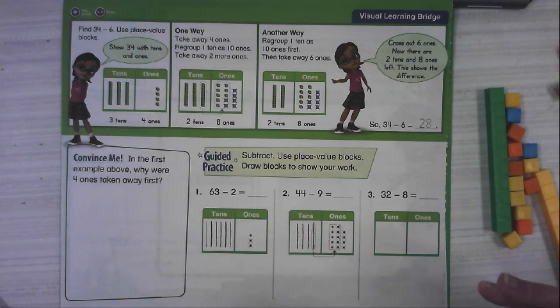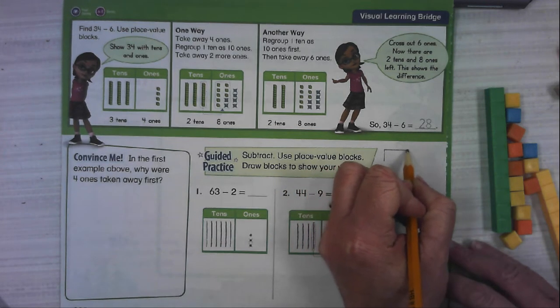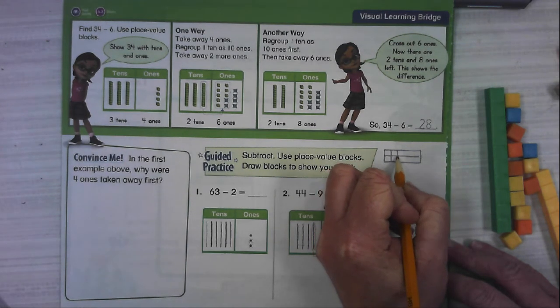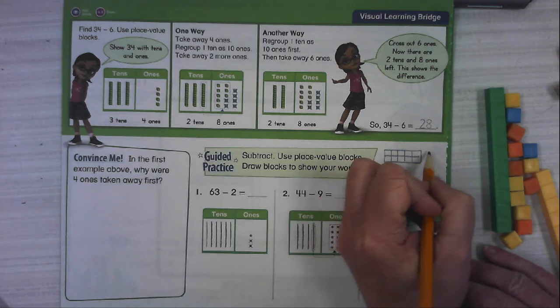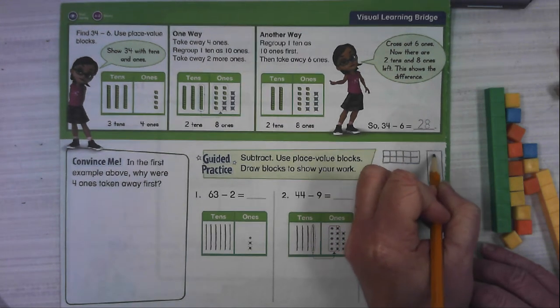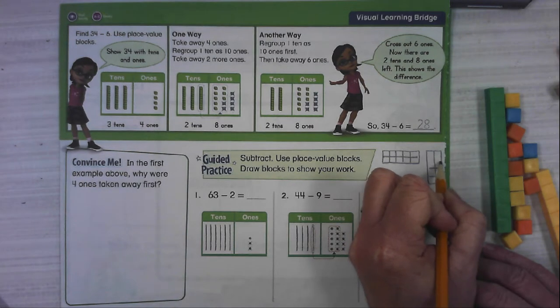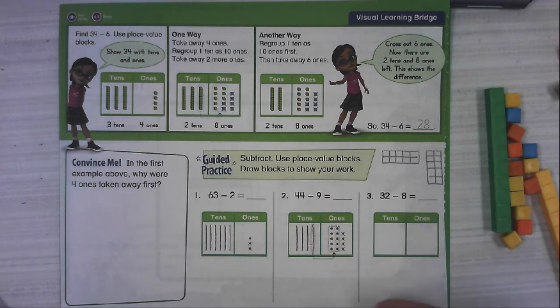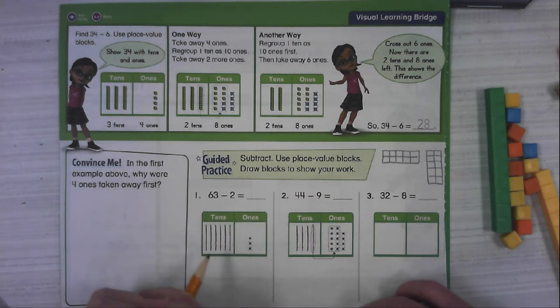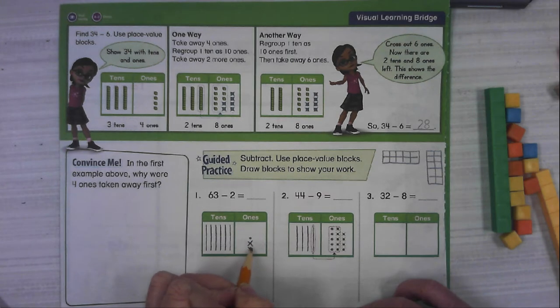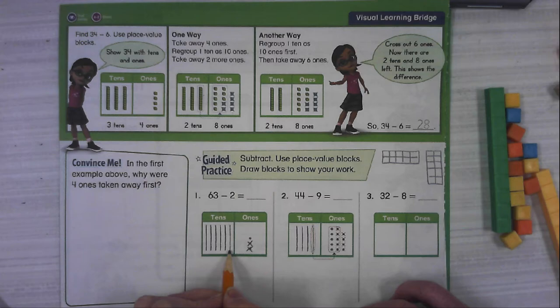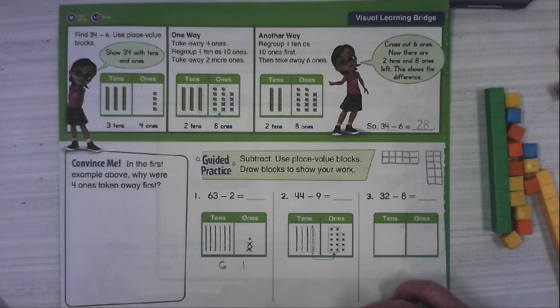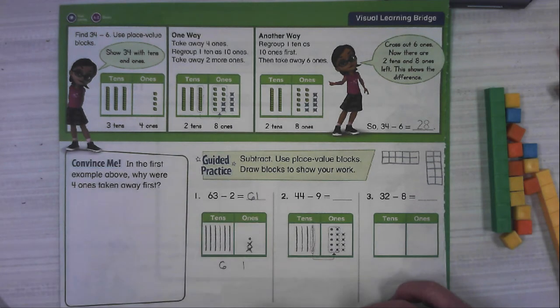The guided practice says subtract using place value blocks and draw the blocks to show your work. Remember, we're going to draw them in the shape of a 10 frame, and it could be a horizontal 10 frame like this or it could be vertical like the book does. It just needs to be in that shape. You don't have to draw the actual 10 frame. Alright, 63 minus 2. We have 6 tens, 3 ones. We're going to cross out 2 ones. In our answer, we still have 6 tens, which is 60, and 1 left in the ones place. So the answer is 61. And we call the answer to a subtraction problem the difference.